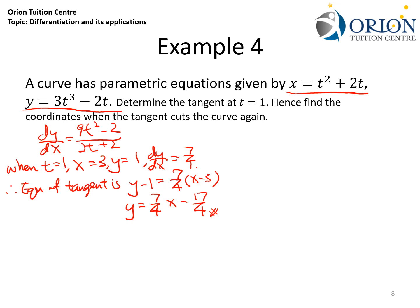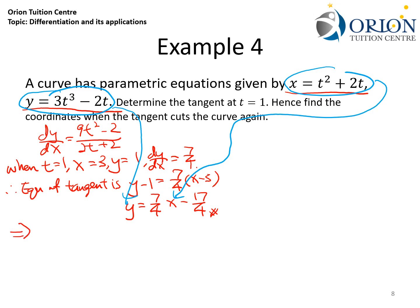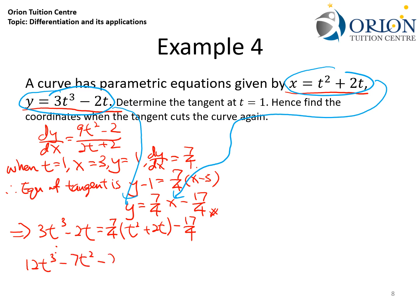To find the other intersection point, I substitute the parametric expressions for x and y into the equation of the tangent, solving in terms of t first. This gives 3t³ minus 2t equals (7/4)(t² plus 2t) minus 17/4. Expanding and rearranging yields 12t³ minus 7t² minus 22t plus 17 equals 0. Solving using a graphing calculator gives t equals 1 or t equals negative 17/12. Since t equals 1 was the original point, I reject it.